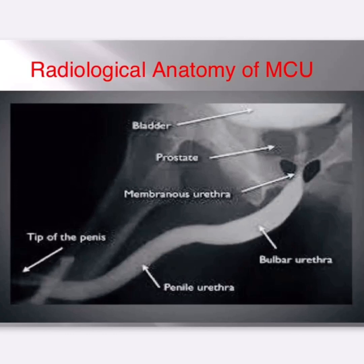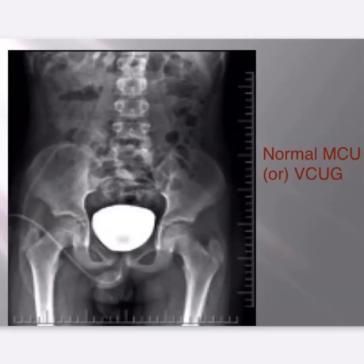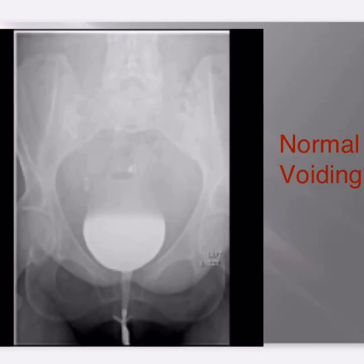This picture shows the radiological anatomy of the MCU procedure. This picture shows a normal MCU patient, also called VCUG. This picture shows a normal voiding patient.